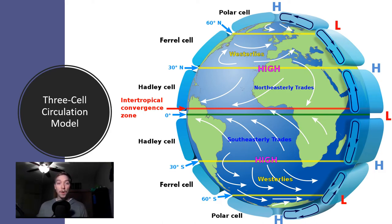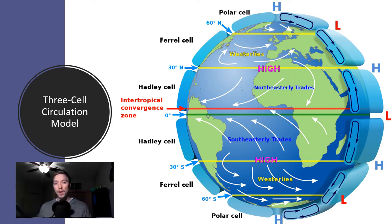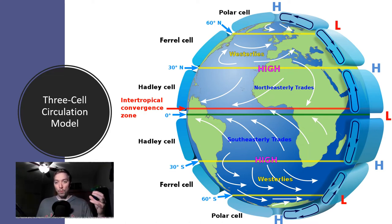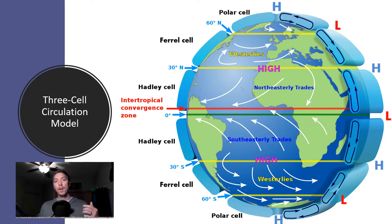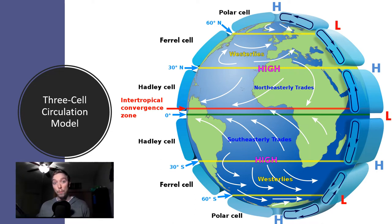Here we can see an idealized diagram of this whole cycle. We see the Intertropical Convergence Zone, the Hadley cells with low pressure right along the equator and high pressure at 30 degrees north and south. The Ferrell cell works alongside a low pressure system at 60 degrees north and south. The polar cell and polar highs at 90 degrees north and south exchange air with those low pressure cells found around 60 degrees. Let's pick apart the system to better understand how it functions.